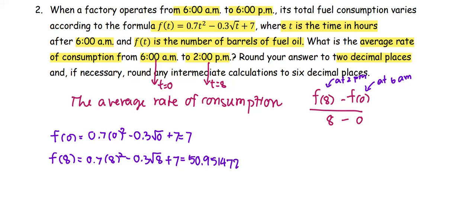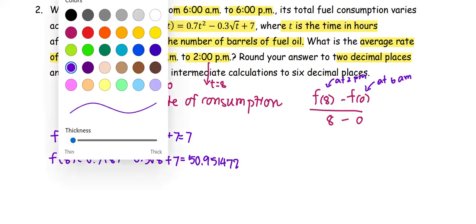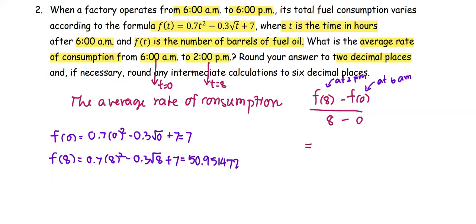We bring these two numbers to the average rate of consumption formula. This equals f(8), or 50.951472, subtracted by f(0), which is 7, all divided by 8 - 0, which is 8.